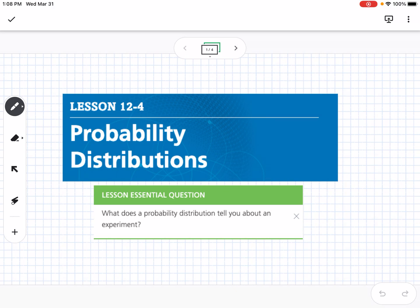This is lesson 12.4, Probability Distributions. Our essential question is: what does a probability distribution tell you about an experiment?